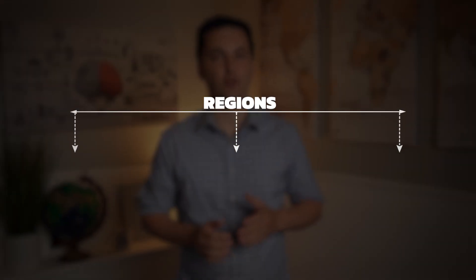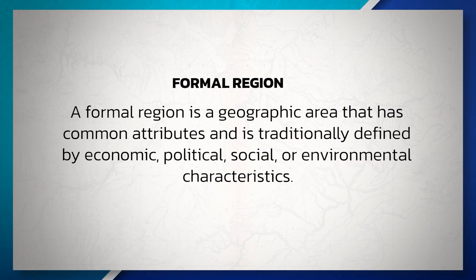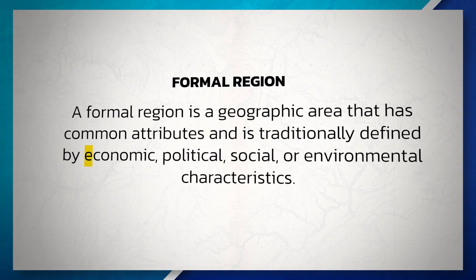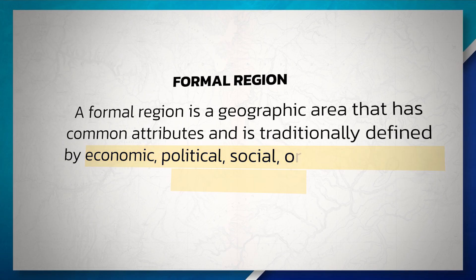Regions can be broken up into three different categories: formal, functional, and perceptual. A formal region is a geographic area that has common attributes and is traditionally defined by economic, political, social, or environmental characteristics. Formal regions are not up for debate — these regions are often homogenous, have set boundaries, and the common characteristics that define them are clearly visible.